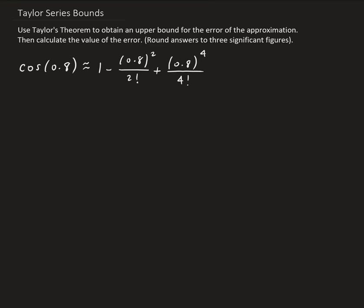For Taylor polynomials and Maclaurin polynomials, we can measure the residual. In general, the residual is basically just the absolute difference between the actual function we're trying to approximate and the approximating polynomial. So the function gives the exact value, and the polynomial gives the approximate value. Taking the difference gives us the residual.